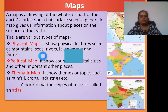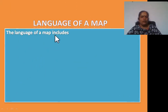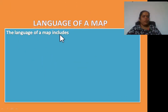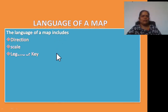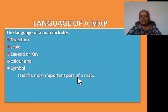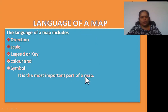Now, the fourth point: language of a map. The language of a map includes direction, scale, legend or key, color and symbol. It is the most important part of a map. The language of a map is a very important part of a map. We will study about direction, scale, legend or key, color and symbol.